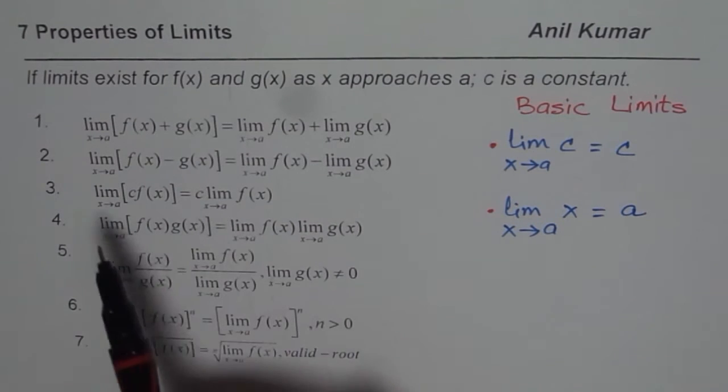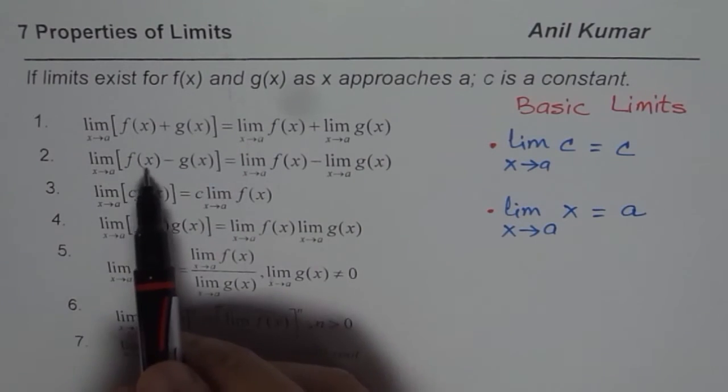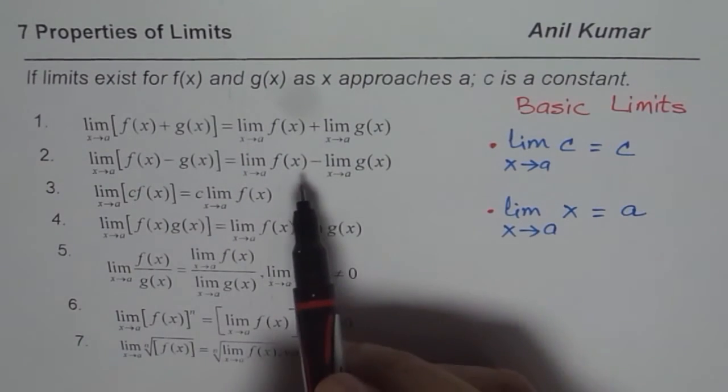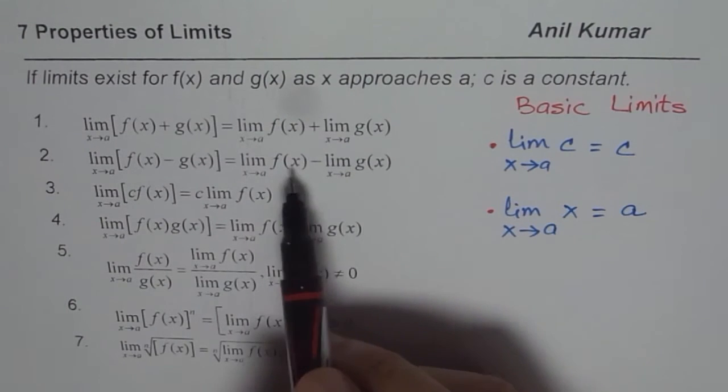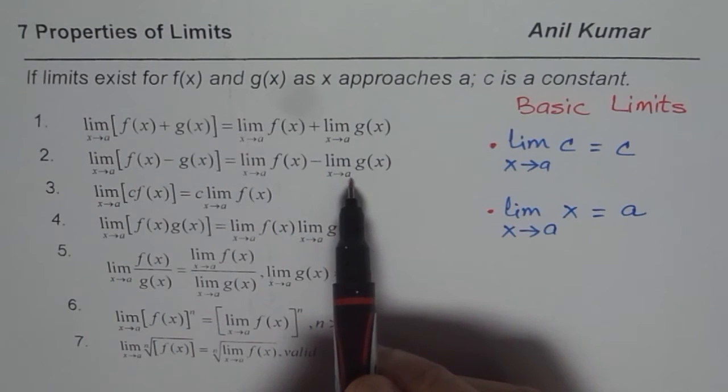How are you going to read the second property? The limit of the difference is the difference of limits. So the limit of f(x) minus g(x) is the difference of their individual limits as x approaches a.